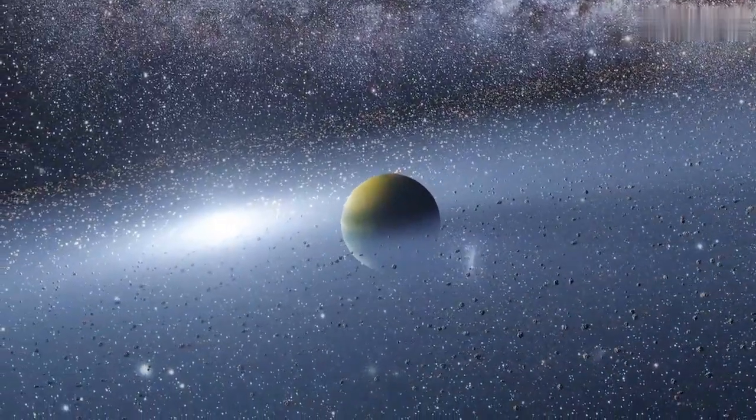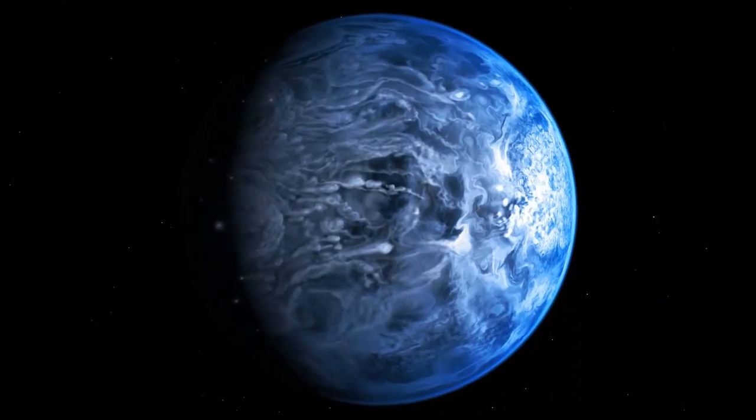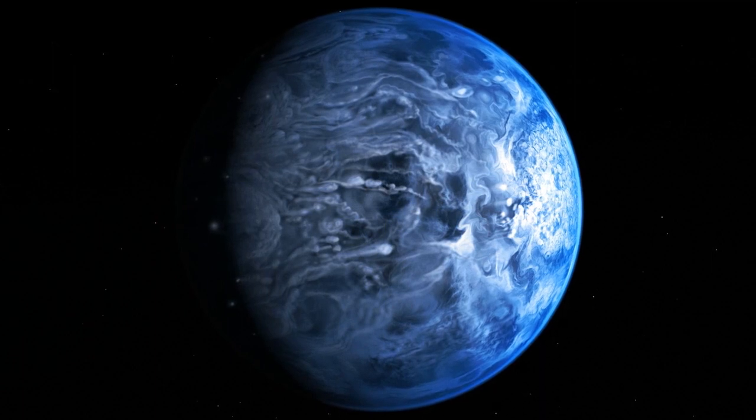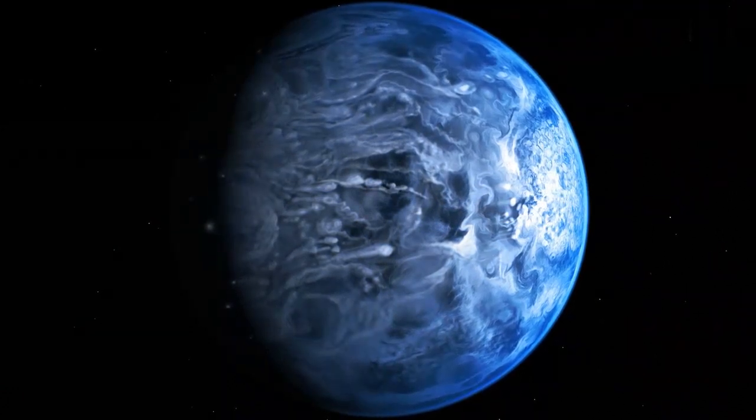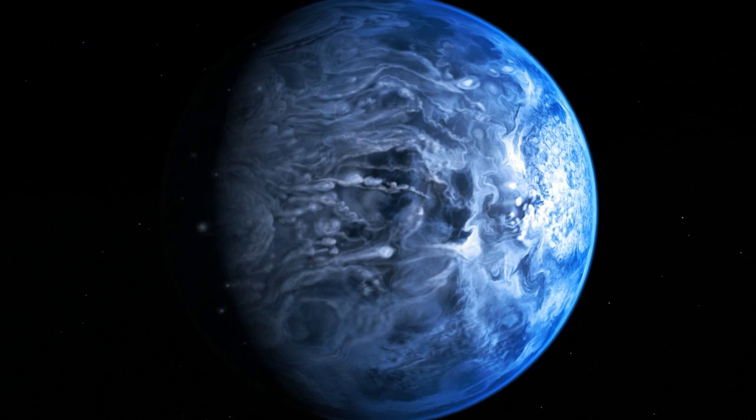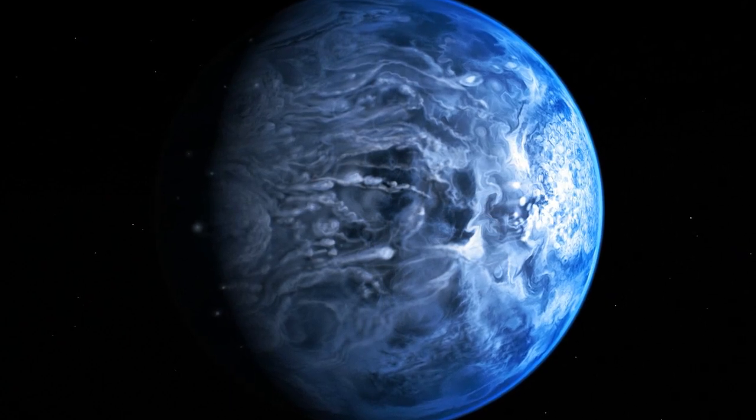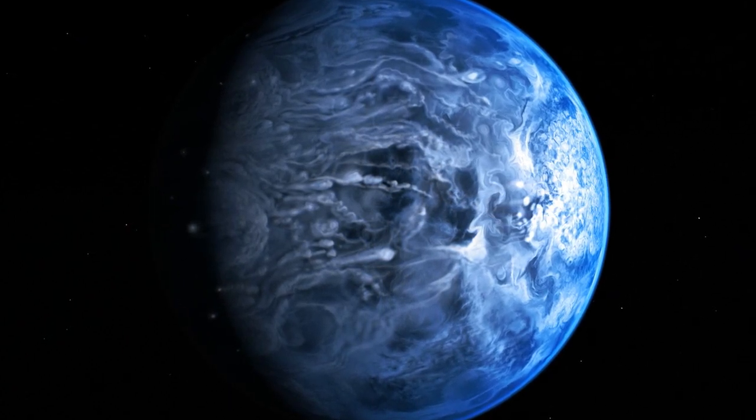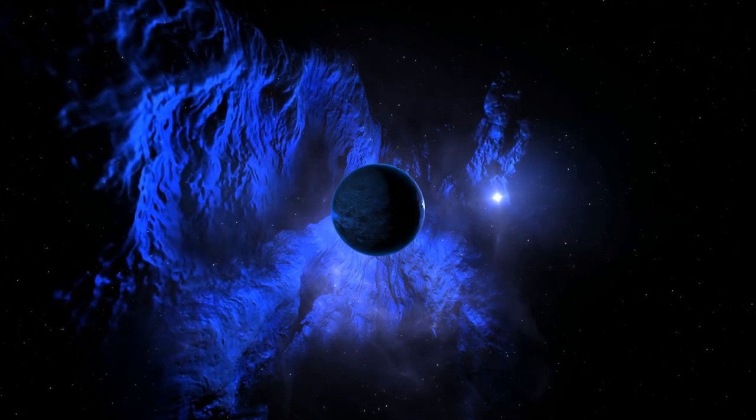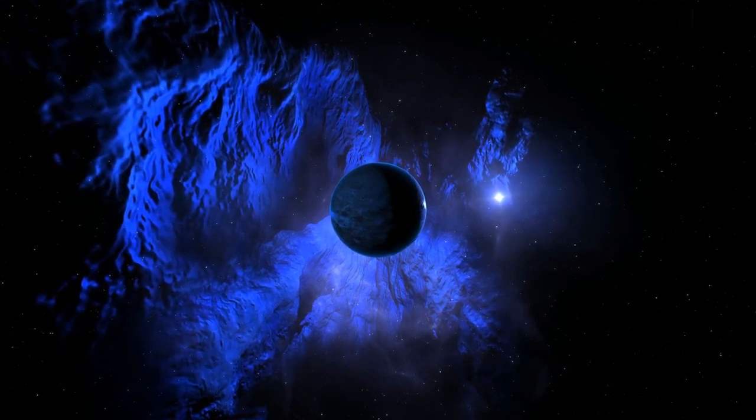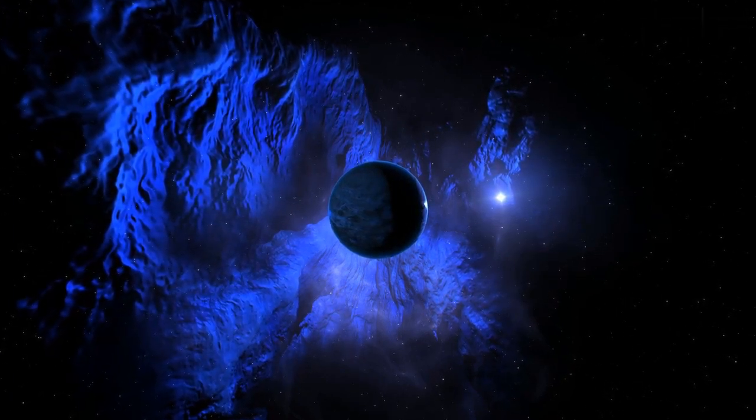One of the most intriguing and well-known facts about HD 189733b is that it has been described as blue in color. This characterization is based on the measurement of the color of its reflected light. However, it's important to understand that this doesn't mean the planet is Earth-like or habitable.